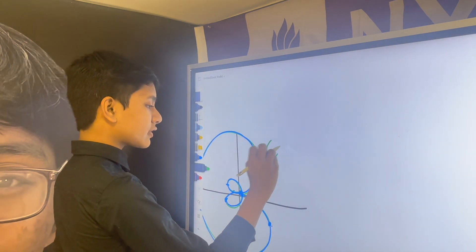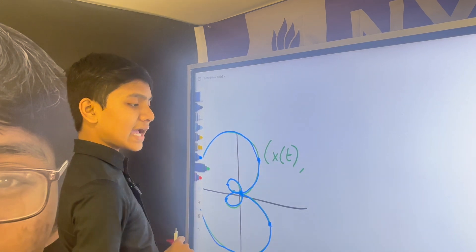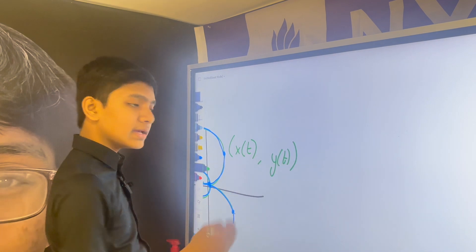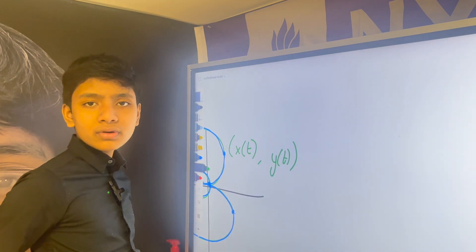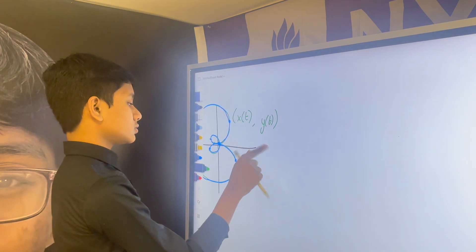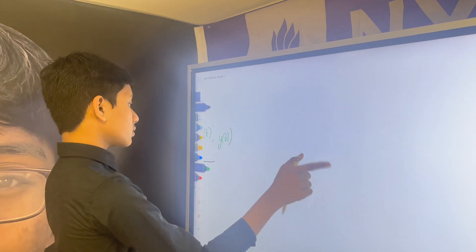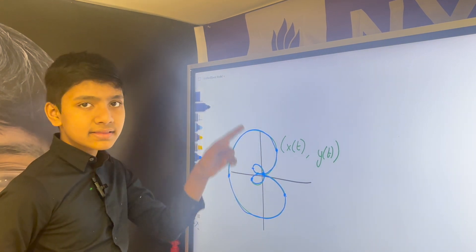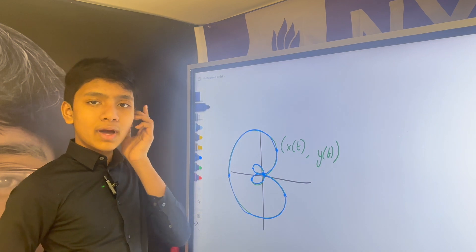Every single parametric function is defined as x is some function of time, y is some function of time. It's basically a point whose coordinates are determined by how much time has passed. So, you might be asking, what's the curve for if it's just a point? Well, the curve is the path that the point traces out along its way.